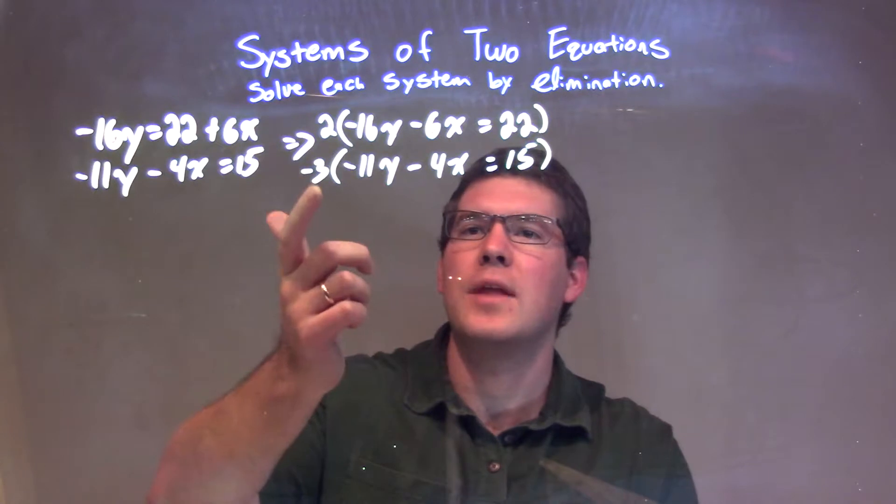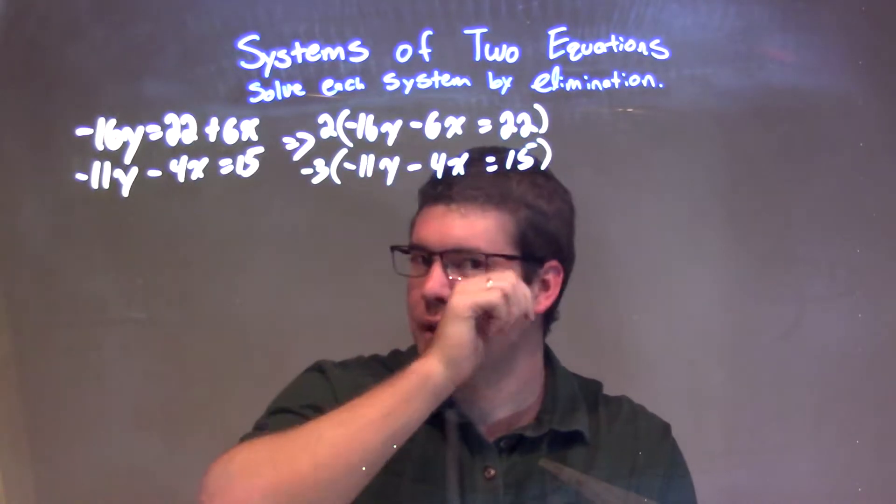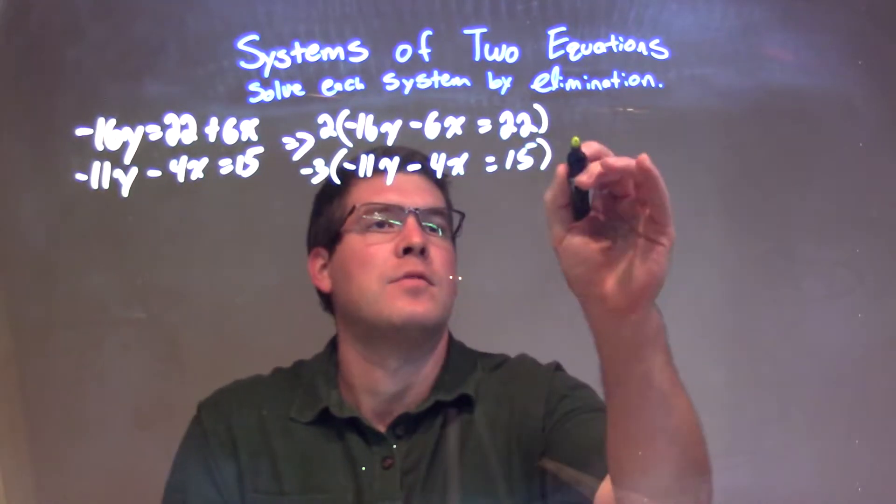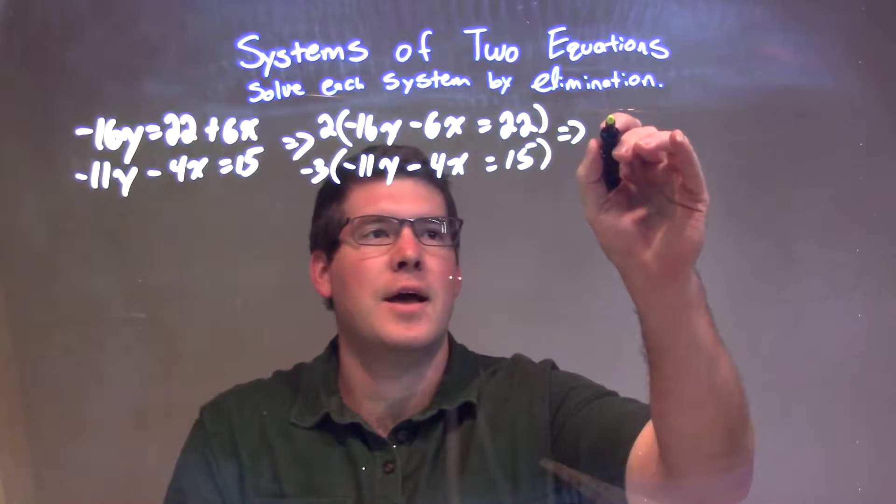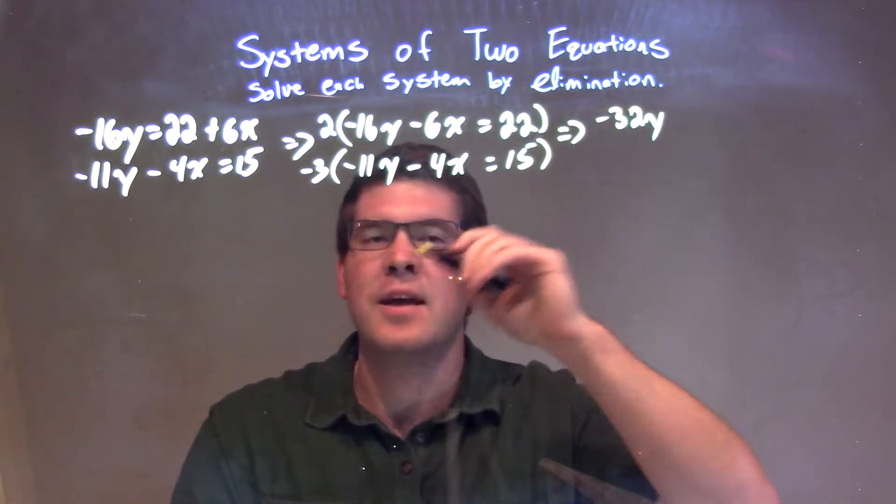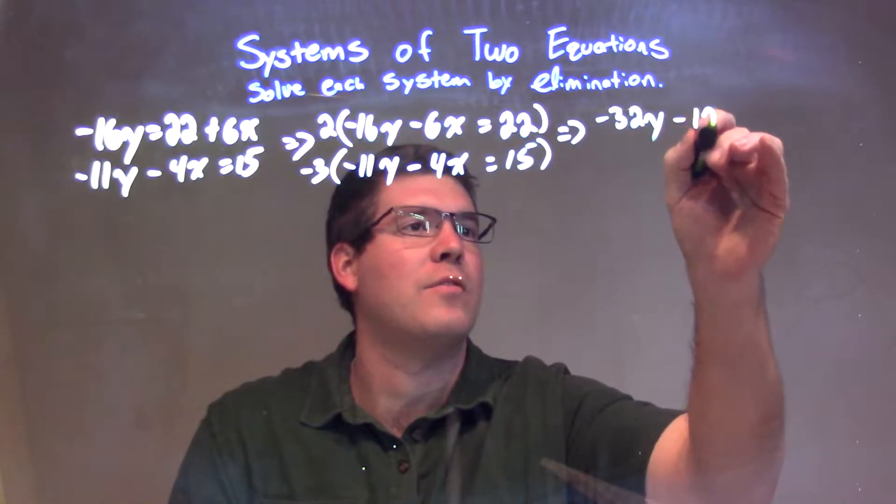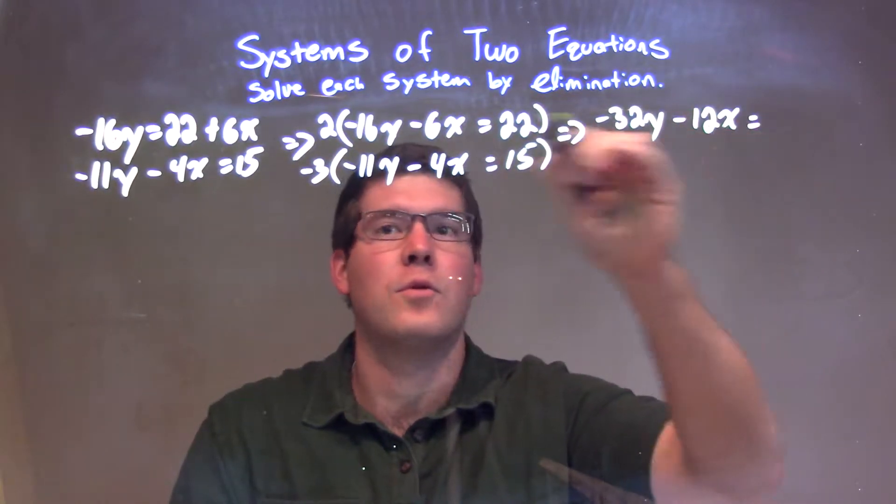Okay, this will allow me to have a positive 12x here and a negative 12x here. So when I add them together, they will eliminate. So when we do that, we'll distribute that across. 2 times negative 16 is negative 32y. And 2 times negative 6x is negative 12x. And that's equal to a positive 44, 2 times 22.